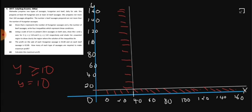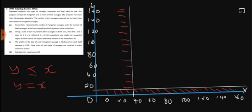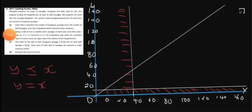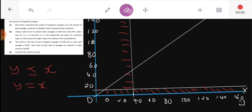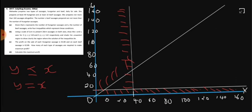Next, Y less than or equal to X is the same as Y equals X — a diagonal line through the origin. The region where Y is less than X is below the line, which is the wanted region. So we shade the unwanted region above the diagonal line.